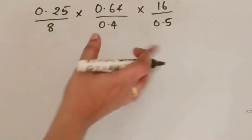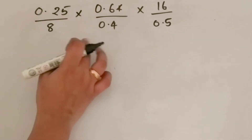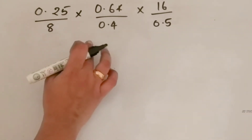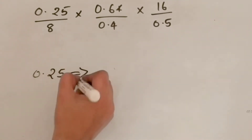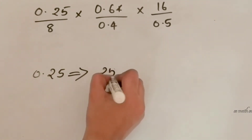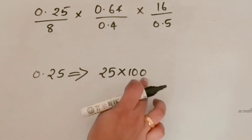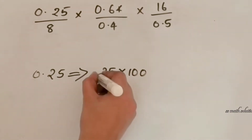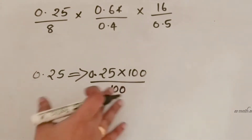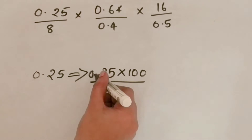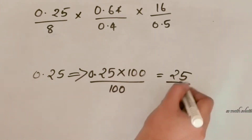We know how to remove decimals. For 0.25 — it has 2 decimal places, so we multiply by 100. If you multiply by 100 you must also divide by 100, so 0.25 becomes 25/100. After multiplying 0.25 × 100 we get 25, and we keep the 100 in the denominator. So 0.25 is written as 25/100.